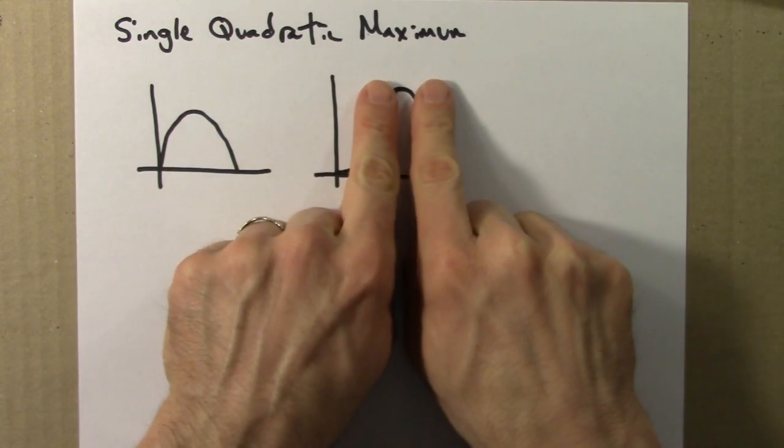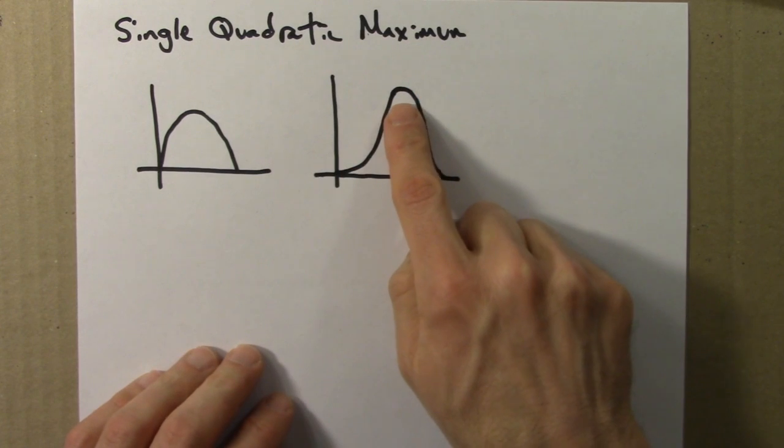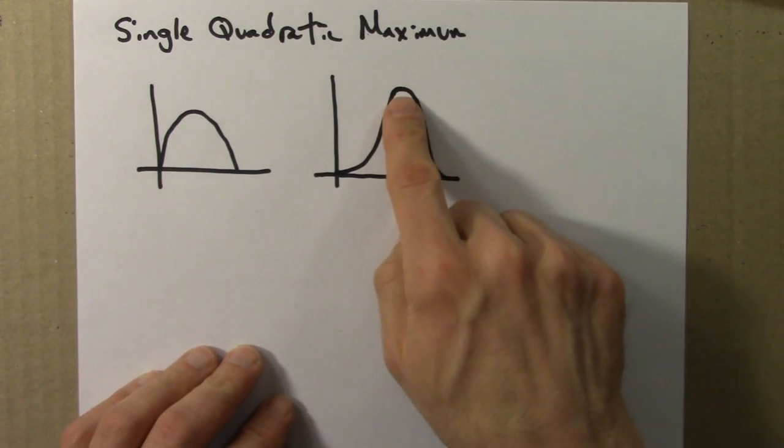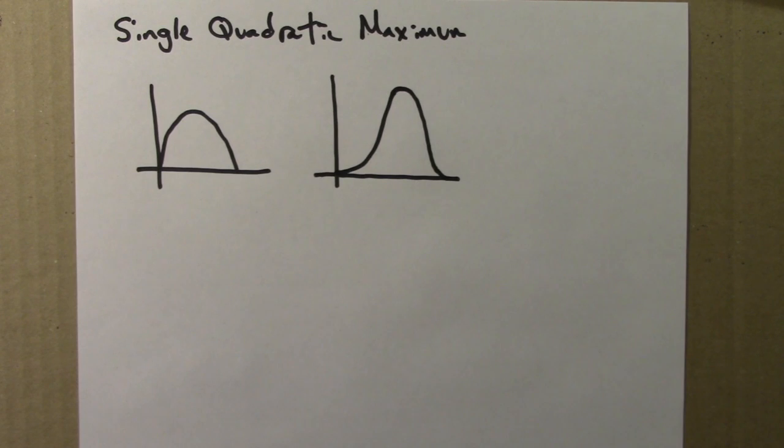And in calculus terms, this just means that the second derivative doesn't disappear. So most functions that have a peak like this will behave this way. Let me give some counterexamples.